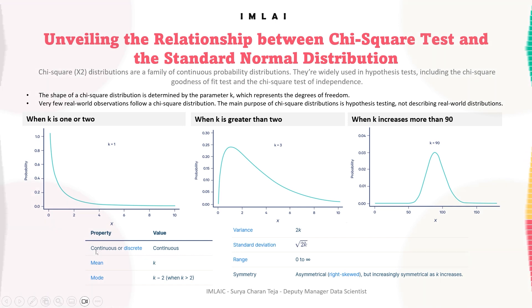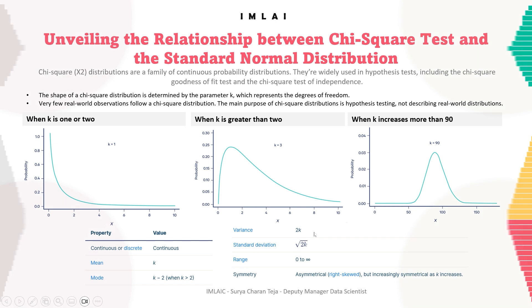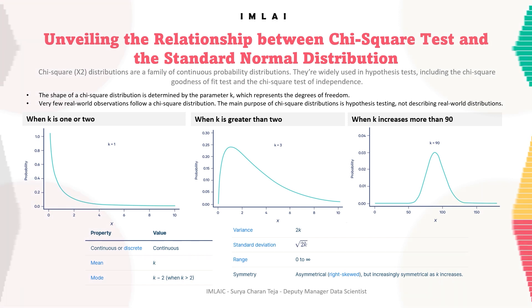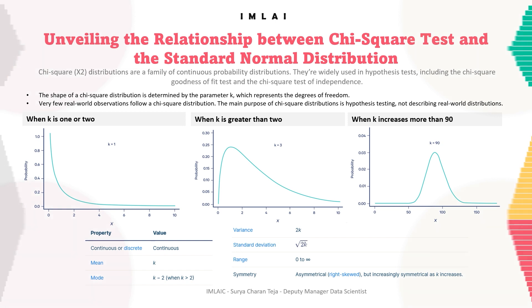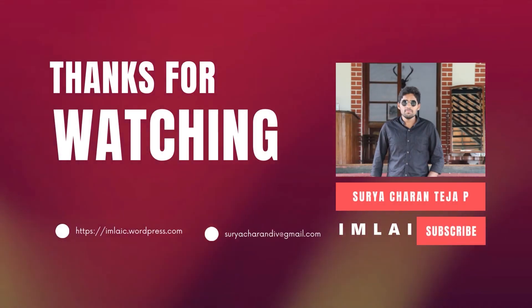The properties of the chi-square distribution are: it is continuous, the mean is k, the mode is k minus 2, the variance is 2k, the standard deviation is the square root of 2k, the range is 0 to infinity, and it is asymmetrical — right-skewed, but increasingly symmetrical as k increases. This summarizes the relationship between the chi-square distribution and the standard normal distribution.